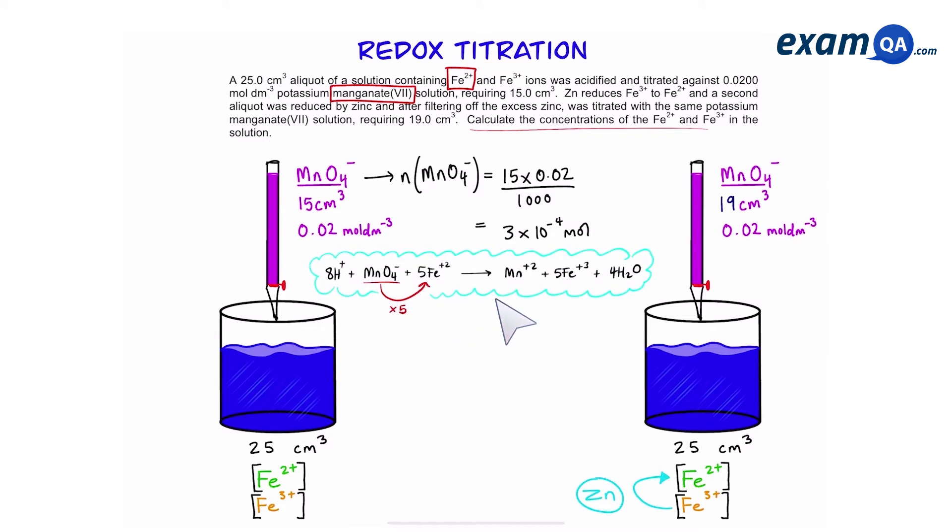Then we'll use our redox half equations to work out the ratio of manganate to iron 2 plus. Once you have the moles of manganate, we're going to times that by 5, and we should get the moles of iron 2 plus in the solution.